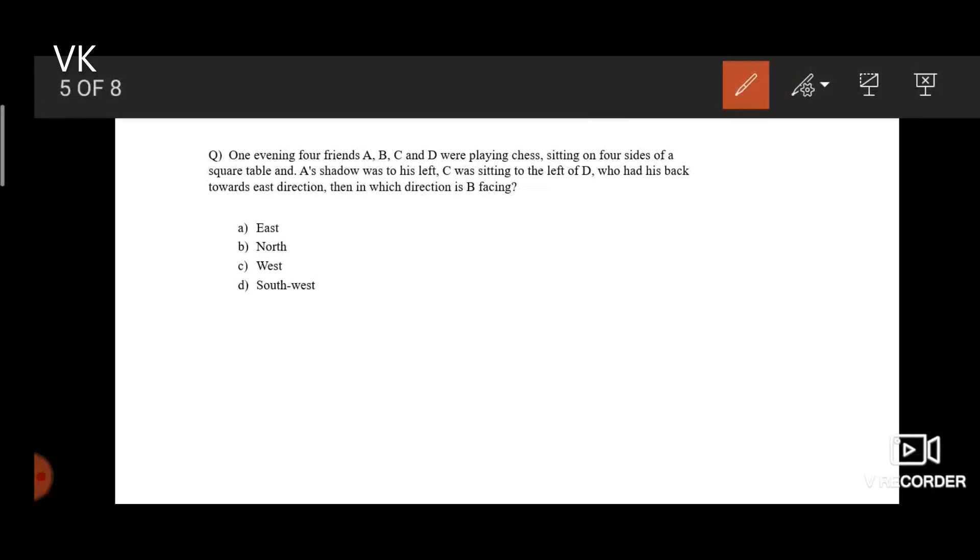One evening, there are 4 friends A, B, C, D were playing chess, sitting on 4 sides of a square table. So this is a square table and 4 members are sitting here.